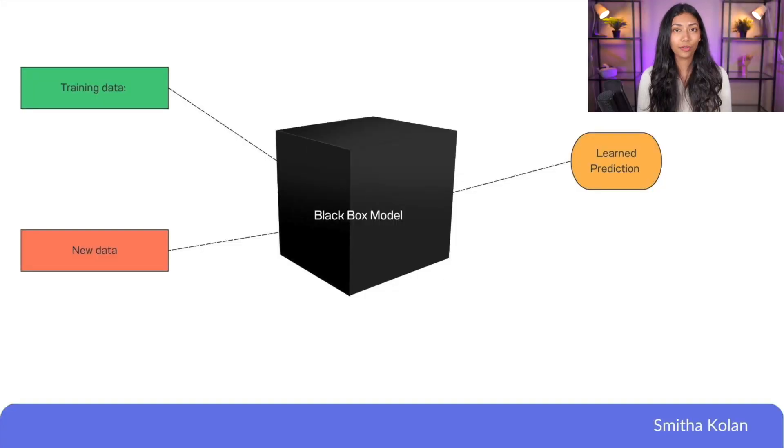So first off, let's talk about why exactly we need something like prompt engineering for ChatGPT, which is based on a large language model. The issue with large language models is that they are not easy to understand, meaning that they often behave like black box models. A black box model is a term used within AI and machine learning to refer to something which can provide useful information without revealing any information about how it actually works.